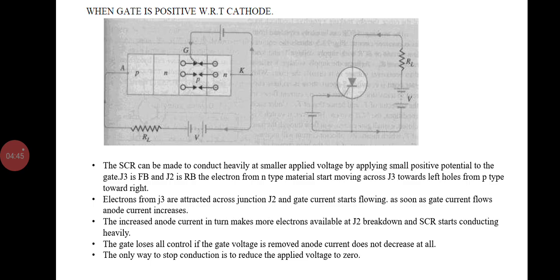Second condition: when the gate is positive with respect to the cathode, the SCR can be made to conduct heavily at a smaller applied voltage by applying a small positive potential to the gate. J3 is forward biased and J2 is reverse biased. Electrons from the N-type material start moving across J3 and gate current starts flowing. As soon as the gate current flows, the anode current increases, causing more electrons available at J2 to break down and the SCR starts conducting heavily. Therefore, the gate loses all control. If the gate voltage is removed, the anode current does not decrease at all.